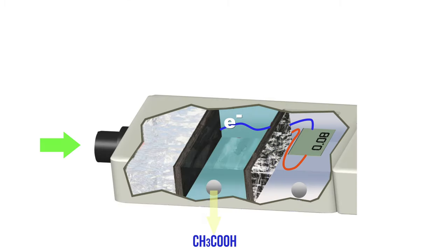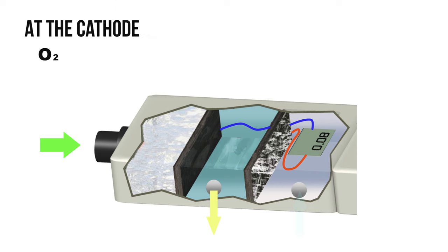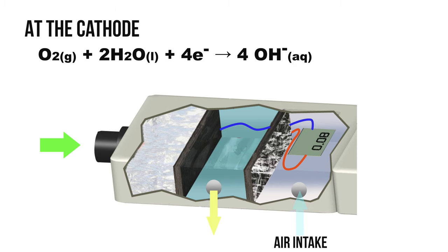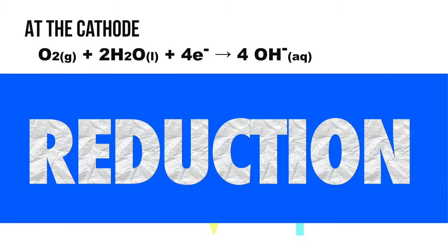The electrons produced in this reaction flow through a wire from the platinum electrode. The wire is connected to an electrical current meter and to a cathode on the other side. Meanwhile, at the cathode, oxygen from the atmosphere is reduced. It is a reduction reaction.